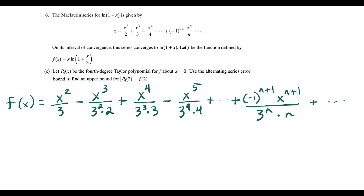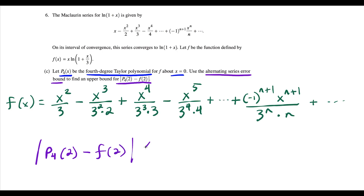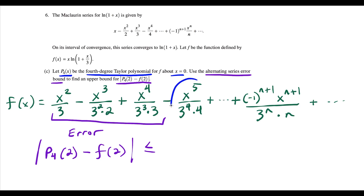For the last part of this question, we're going to use the work from part A. We have p sub 4 of x as a fourth degree Taylor polynomial for f about x equals 0. We're going to use the alternating series error bound to find an upper bound for the absolute value of p sub 4 of 2 minus f of 2. The trick to these kinds of questions is that the degree of the polynomial is degree 4, which means p sub 4 of x is just the first three terms together. The goal is to find the error bound used to approximate the function at 2 using the fourth degree Taylor polynomial, and we use the first unused term — since we stopped at degree 4, the error bound comes from the fifth power term, evaluated at x equals 2.